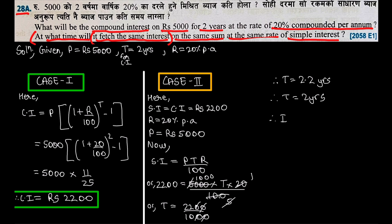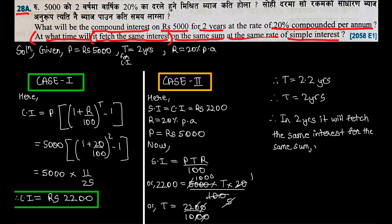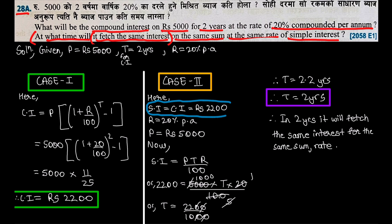So the answer to the second part is 2 years — in 2 years, simple interest will fetch the same interest for the same sum at the same rate. The formula is straightforward. This completes the solution to question 28A.